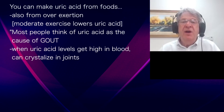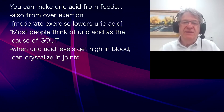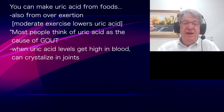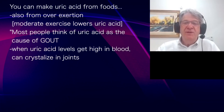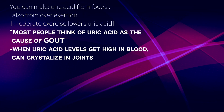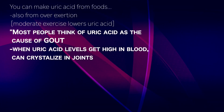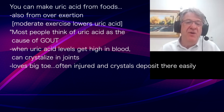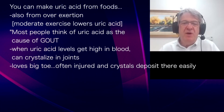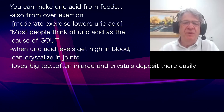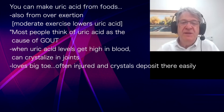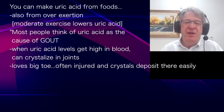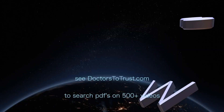Most people think of uric acid as the cause of gout. Gout is a disease where uric acid levels get high in the blood, and because uric acid is poorly soluble, it can crystallize — typically in joints. It loves the big toe because we walk on it and there's often some accumulated damage, making it easier for crystals to deposit there. Gout is the classic disease people think of when getting a uric acid check.